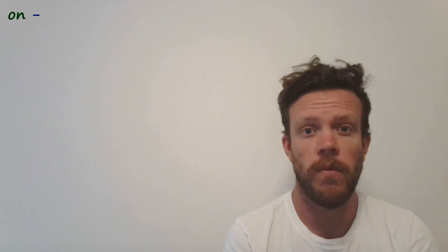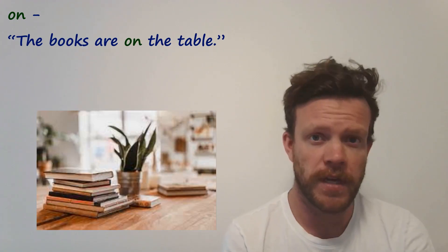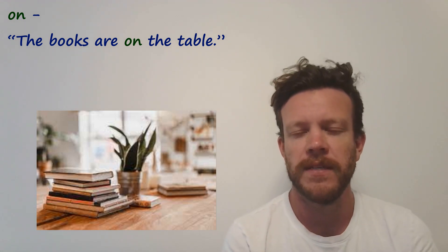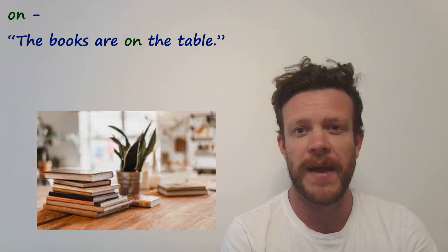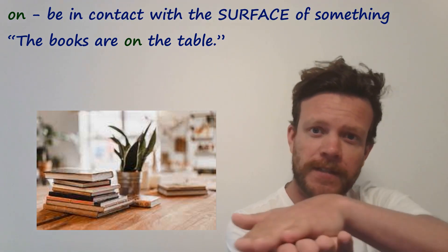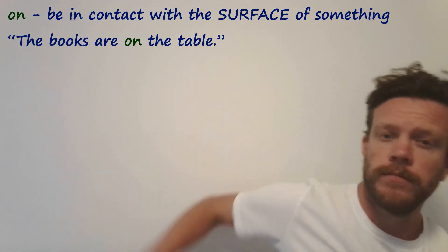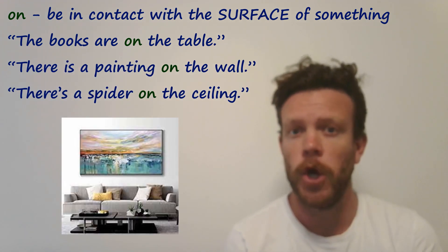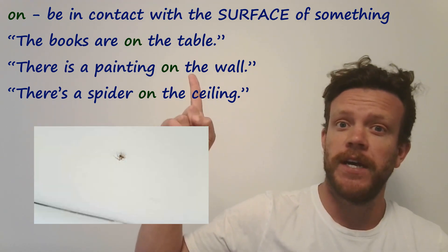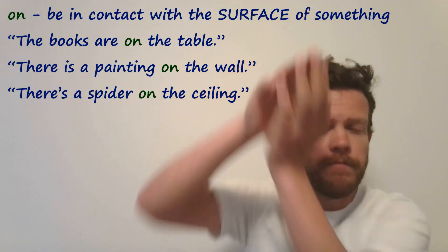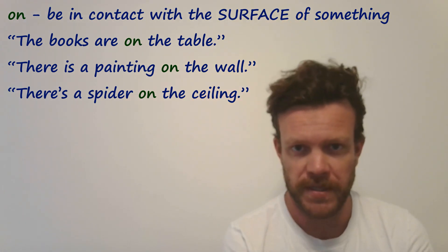So when do we use 'on'? Students learn quite early that 'on' is used for one thing above another — for example, the books are on the table. But a better way to think about it: 'on' is always about something being on a surface. For example, my hand is on the wall, there is a painting on the wall, there is a spider on the ceiling — all on the surface. That's when we use the preposition 'on.'